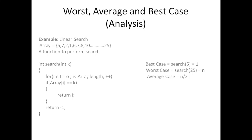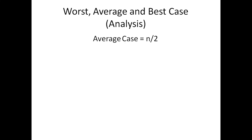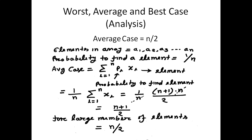The average case will be n/2. Suppose we are looking for a middle element or an element somewhere in the middle of the array. The probability of finding any element is 1/n since there are n elements. The average case is mathematically the summation of i = 1 to n of pᵢ·xᵢ, where xᵢ is the element we are looking for and pᵢ is the probability of finding it.